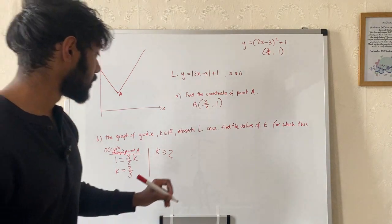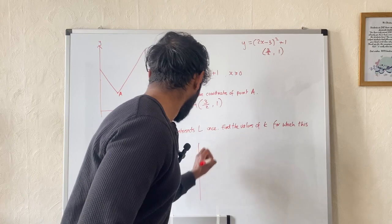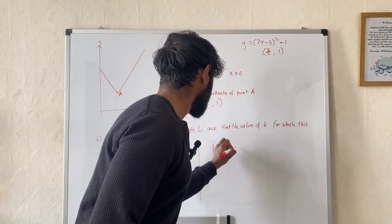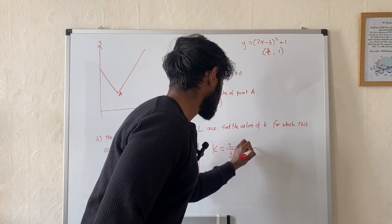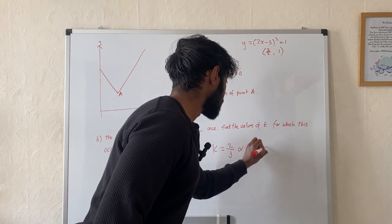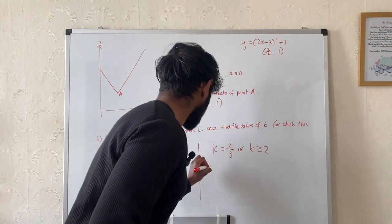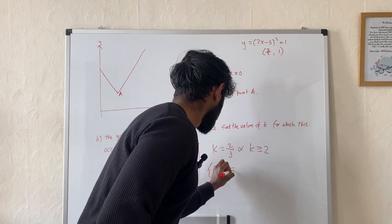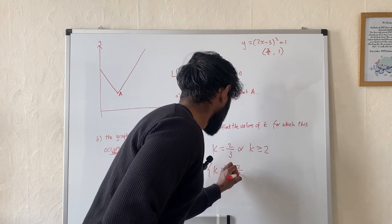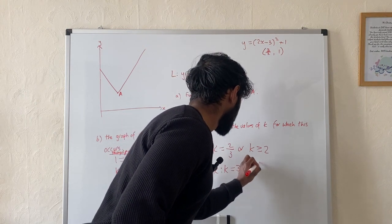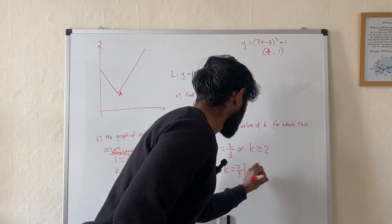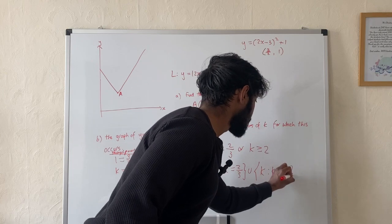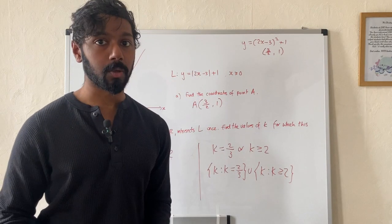So my final solution is k equals 2/3, or k is greater than or equal to 2. Or if you want to write that in set notation, it would be written as such. And there we go — thank you.